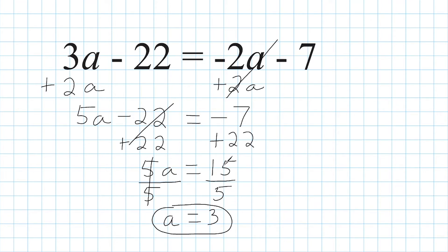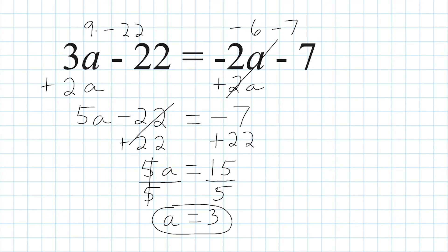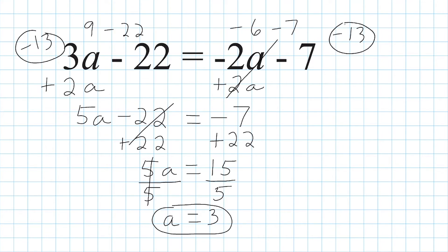Now to check our answer, we substitute the variable a with 3 and verify the left equals the right-hand side. We multiply 3 times 3 which is 9 minus 22, and on the right-hand side we do negative 2 times positive 3 which is negative 6, then subtract 7. And 9 minus 22 equals negative 13, and negative 6 minus 7 is also negative 13. So when checking your answer, you should get a true statement where you have the same value on both sides.